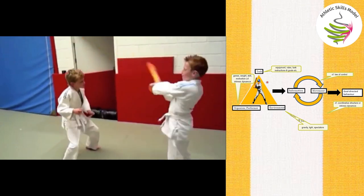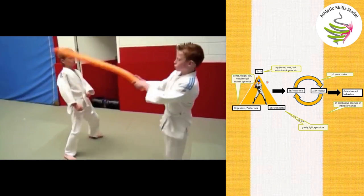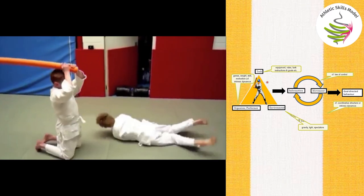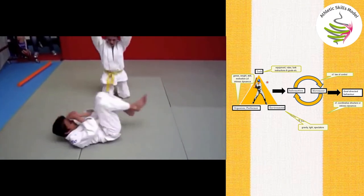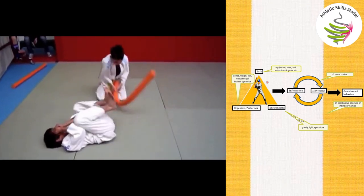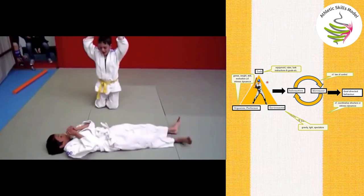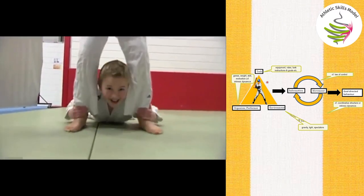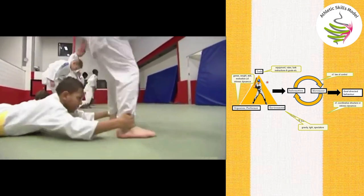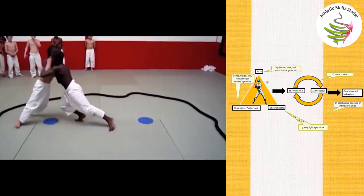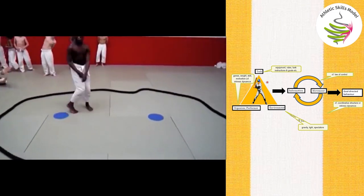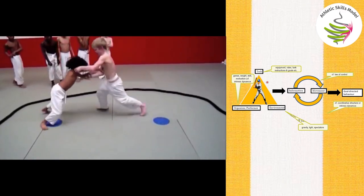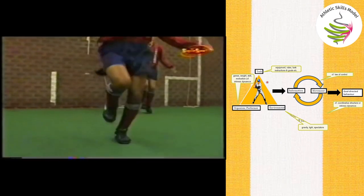With this constraint-led perspective, the coach or teacher can mark and limit the environment in such a way that this guides the learning. For instance, by scaling the equipment and play area a subconscious mode of learning will be encouraged. Scaling the environment allows children to perform actions that resemble the adult game while maintaining the learning focus on what is fundamentally necessary for skilled performance: being adaptive during gameplay.